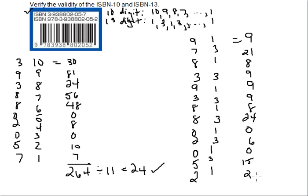Adding these together on my calculator, I get 120. This time what we're looking for is not divisibility by 11, but divisibility by 10. This one is divisible by 10 with no remainder, which means that both of these ISBNs are valid.